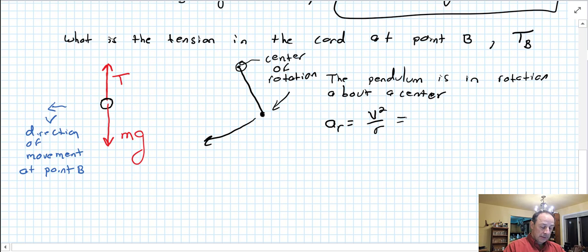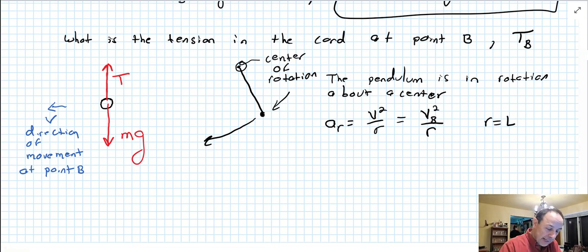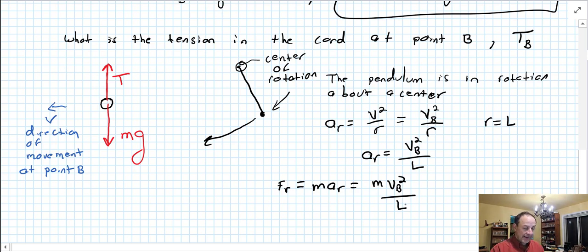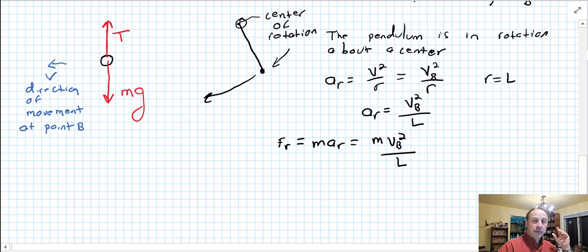For our purposes, because we're interested in v at B, it's v_B squared over R, and R equals L, that's the distance that we gave or the length of the chord. So in this problem, a_R is the velocity of B squared over the length of the chord. The centripetal force is just the mass times the centripetal acceleration, is m v_B squared over L.